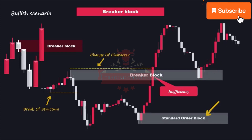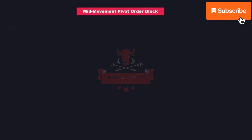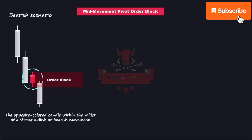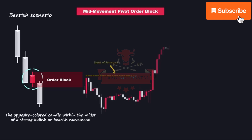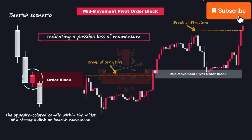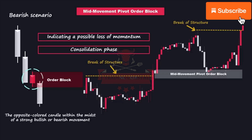Let's move into the last order block type: the mid-movement pivot order block. It refers to the formation of an opposite-colored candle within the midst of a strong bullish or bearish movement. This candle acts as a potential reversal signal, indicating a possible pause or reversal in the current market direction. The psychology behind considering these zones as potential reversal areas is that price has a tendency to reverse upon reaching them. They serve as important signals indicating a possible loss of momentum or a consolidation phase, and we monitor these zones closely as potential reversal areas.